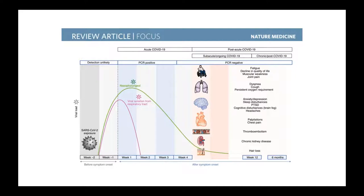You have a PCR-positive reaction from the nasopharyngeal part of the body and viral isolation from the respiratory tract. And then about two to three weeks later, the symptoms will occur. These symptoms are not only in the lung; the symptoms are in many organs of the body, and they generate a number of symptoms — for example, fatigue, declining quality of life, muscular weakness, joint pain, dyspnea, cough, and persistent oxygen requirement.